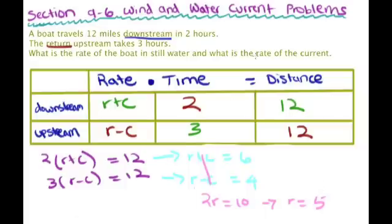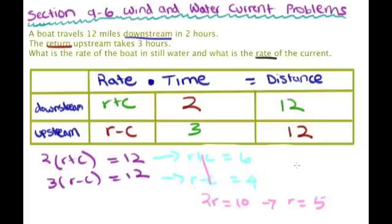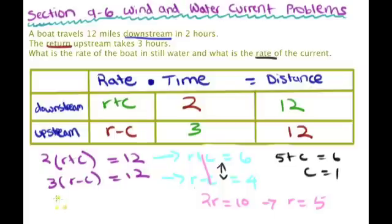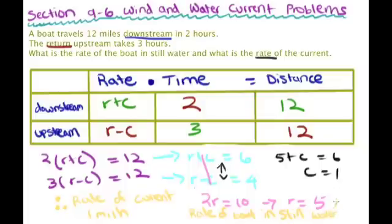Now we plug back in to find the rate of the current. We know these equations are equivalent, so we can just plug into the simpler one: 5 plus c equals 6, so c equals 1. Therefore, the rate of the current is 1 mile per hour, and the rate of the boat in still water is 5 miles per hour.